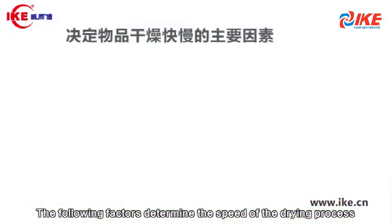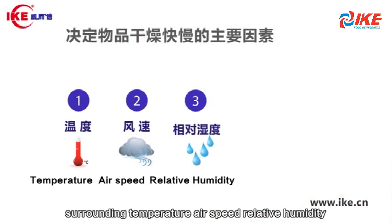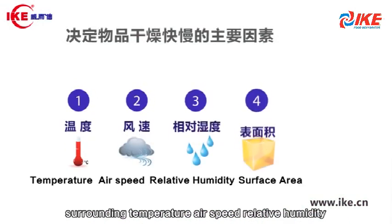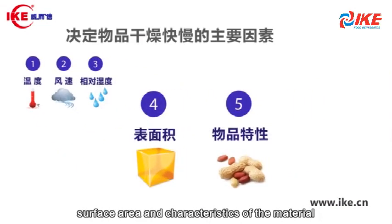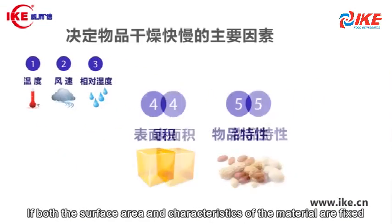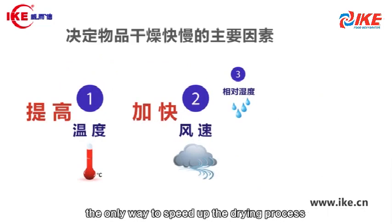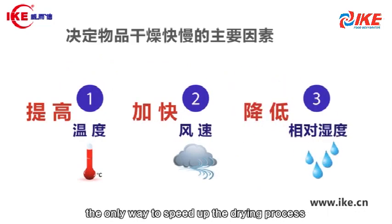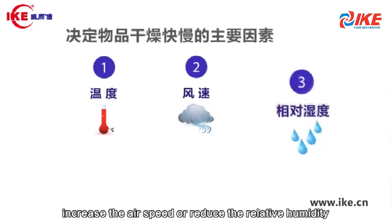The following factors determine the speed of the drying process: surrounding temperature, air speed, relative humidity, and the surface area and characteristics of the material. If both the surface area and characteristics of the material are fixed, the only way to speed up the drying process is to either increase the temperature, increase the air speed, or reduce the relative humidity.